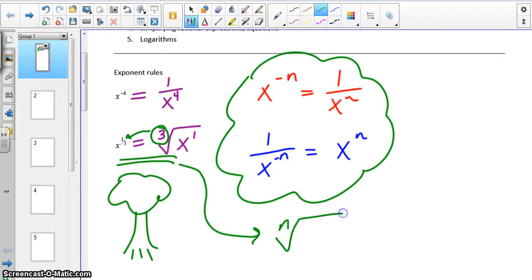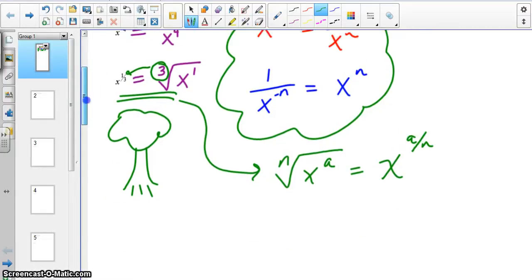So if we have the nth root of x to the a, that's x to the a over n as the exponent. So that's just a little reminder. Those things do come up in calculus a fair bit.